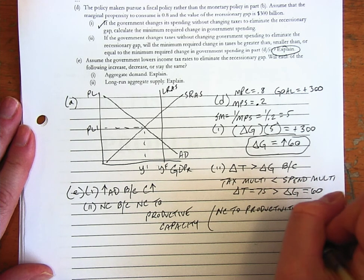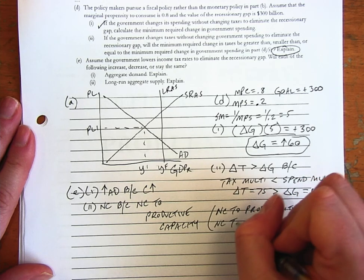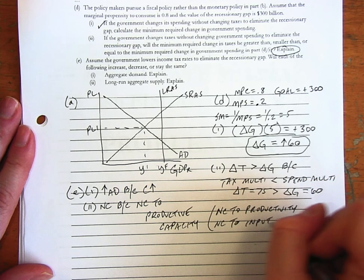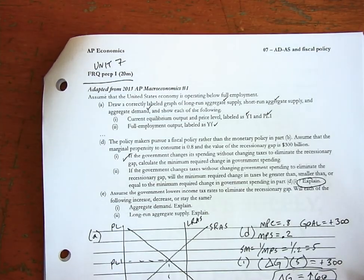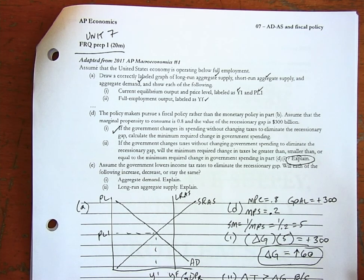And so part of that is saying no change to productivity, how productive we are. And no change to input costs is the other way to say it. So no change to inputs. If there's not a change to aggregate supply, then it won't change that long run. So hopefully this helps you make sense of the first prep question. I'll see you next time.